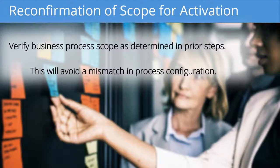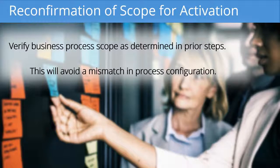Now's a good time to take stock and make sure that your implementation is on the right course. So here we do a reconfirmation of the scope for the activation. Verify the business process scope as determined in prior steps — this will avoid a mismatch in process configuration. By this time, you've gotten pretty far into the implementation and have a good idea of what's going on.